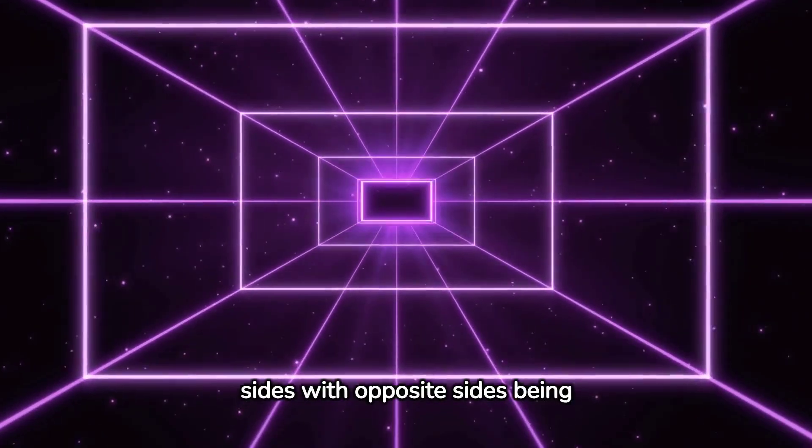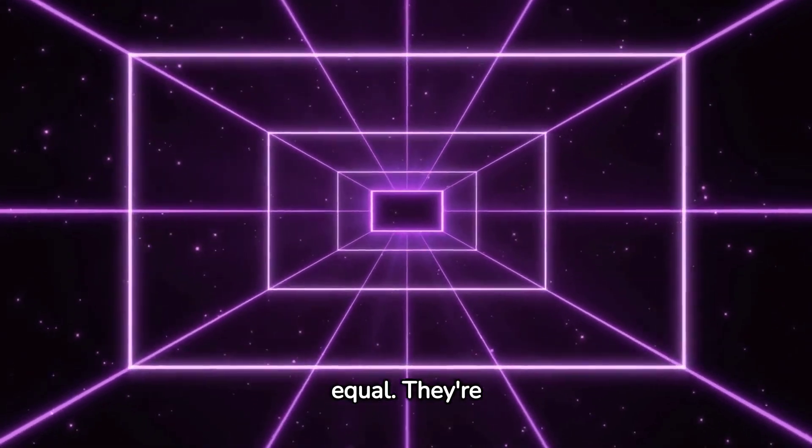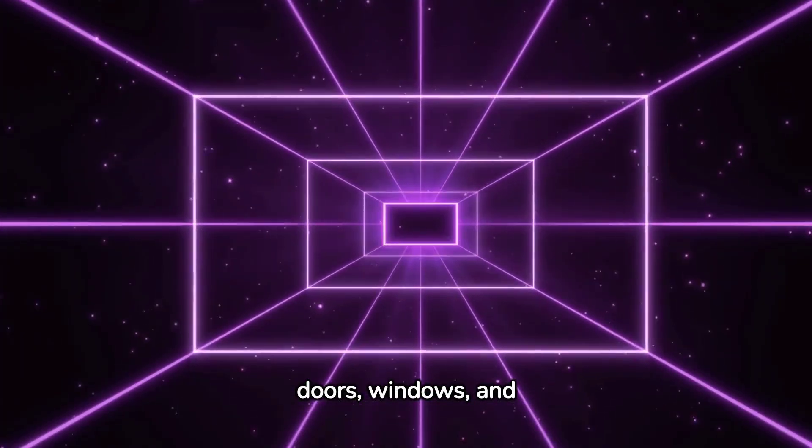Rectangles have four sides with opposite sides being equal. They're commonly found in objects like doors, windows, and books.